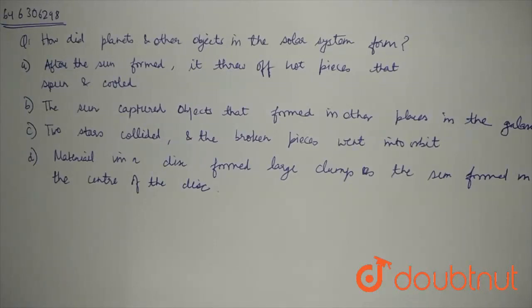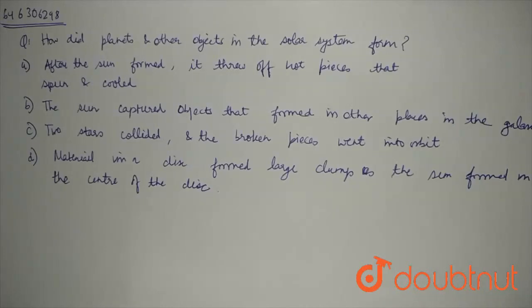The solar system was created by a dense interstellar cloud — a cloud of gas and dust particles. There was no rocket science involved; it started simply from gas and dust.